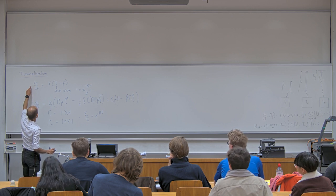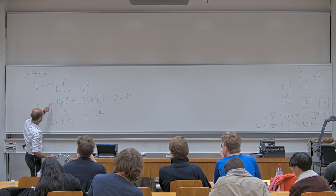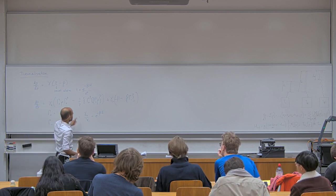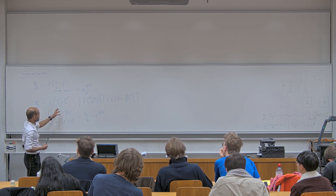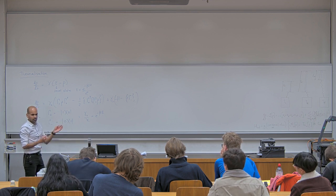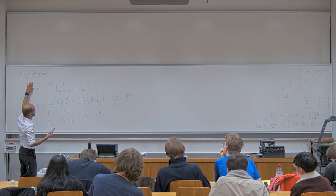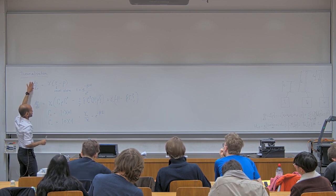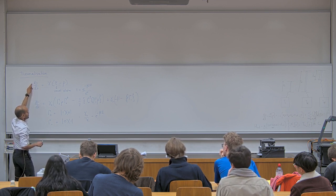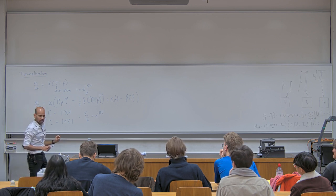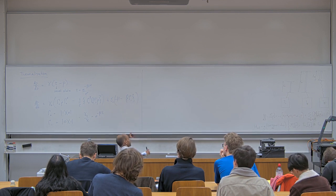If you want the steady state of the dissipator equation to be the thermal state, you must ensure that Γ₊/Γ₋ = e^{−βE}, where E is the energy gap of the qubit. These two equations are not the same — the reset version has extra fast dephasing, decaying off-diagonal elements even faster — but both have the property that the steady state at t → ∞ is the thermal state.